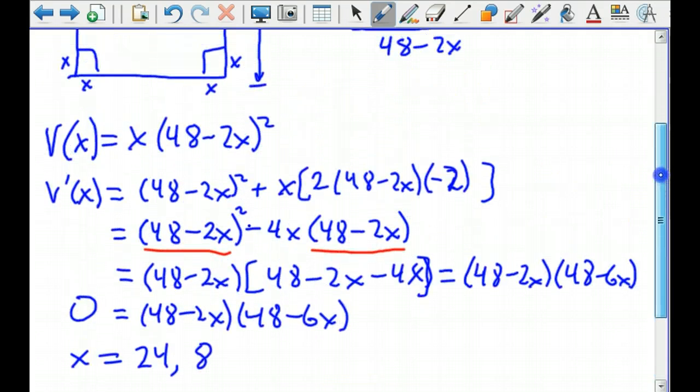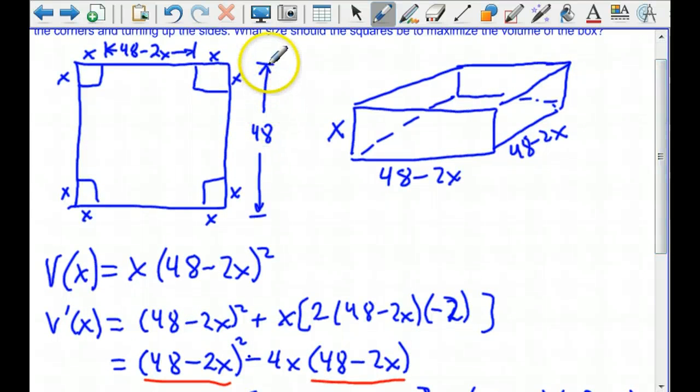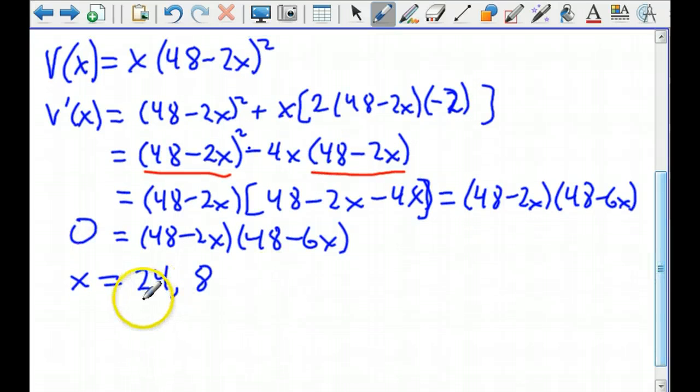What do we use? Think about it. If the whole side is 48 and I cut away 24 from this end and 24 from that end, I'm not going to have any cardboard left to make a box. So that gives us our minimum. That's where our relative min is, and this is where our relative max is.